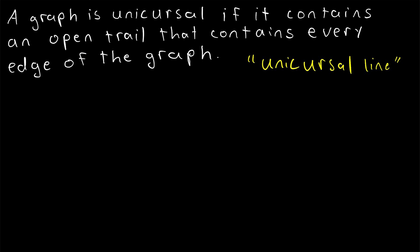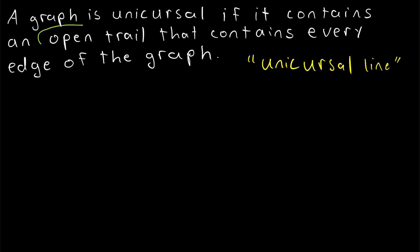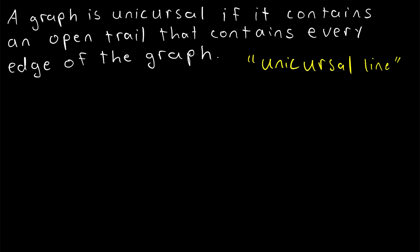So again, a unicursal line is an open trail that contains every edge of a graph. Remember that by definition, an open trail starts and ends at distinct vertices — that's what open means. It may repeat vertices in the internal part of the trail, but it may not repeat edges.